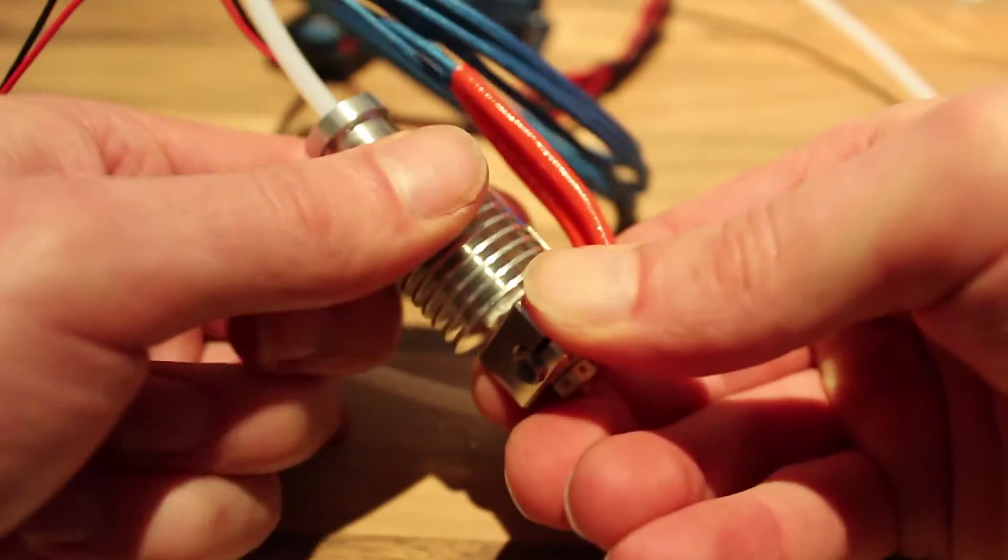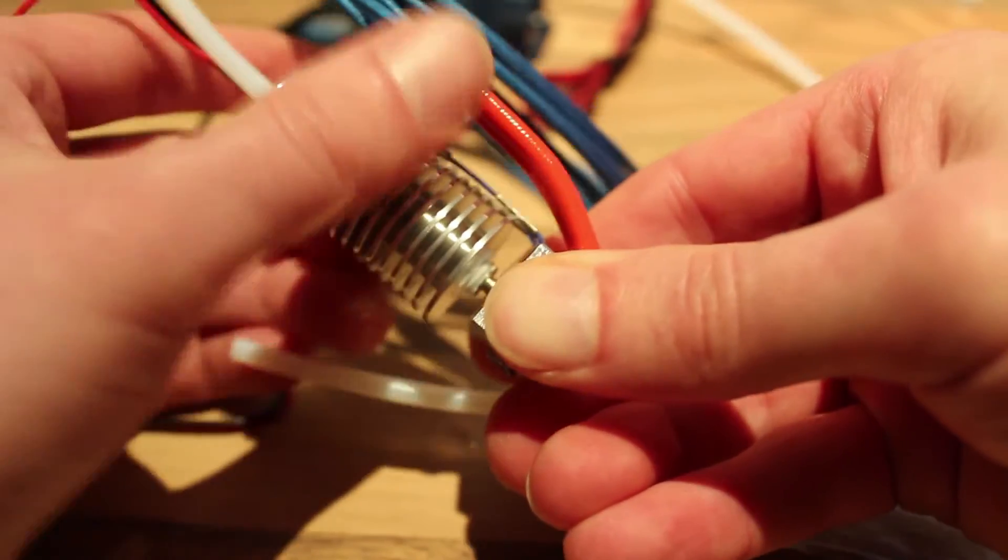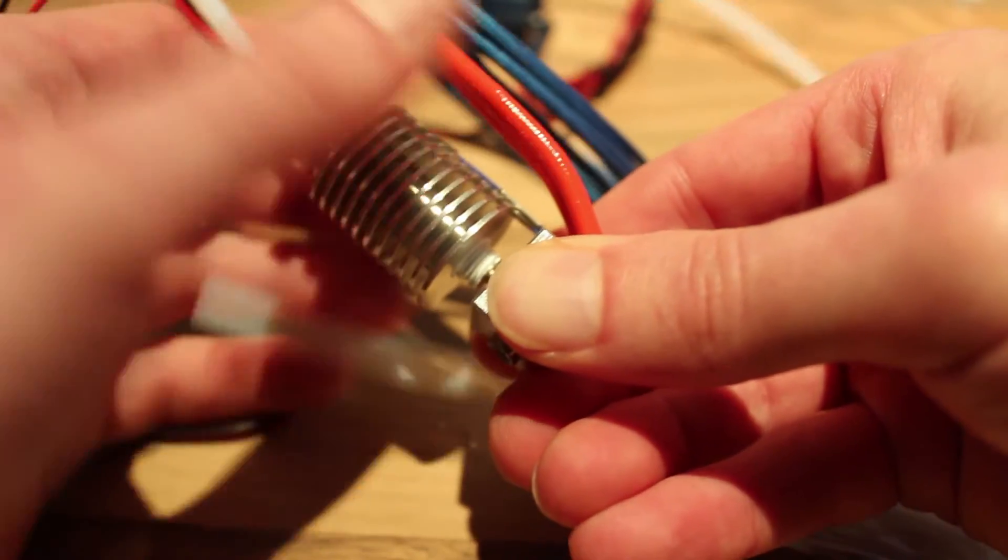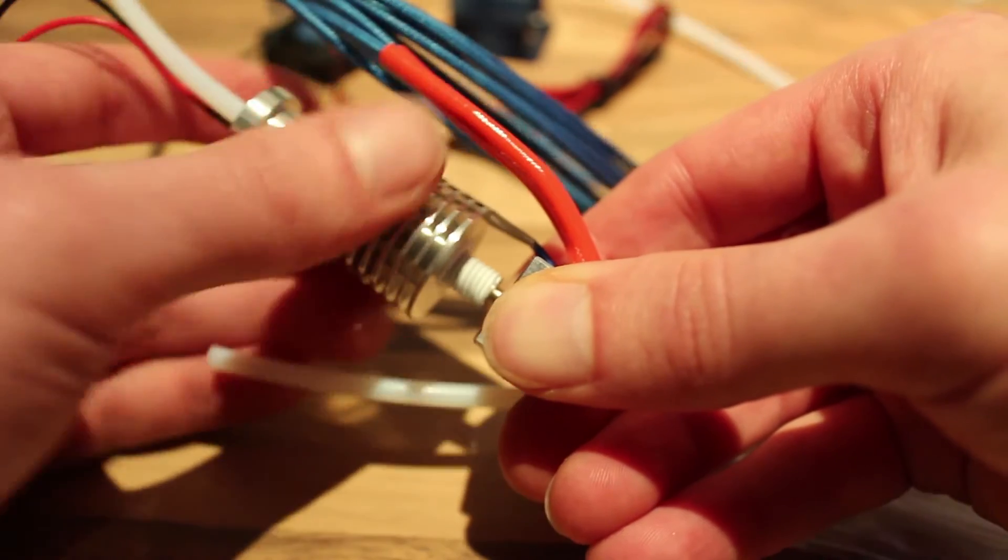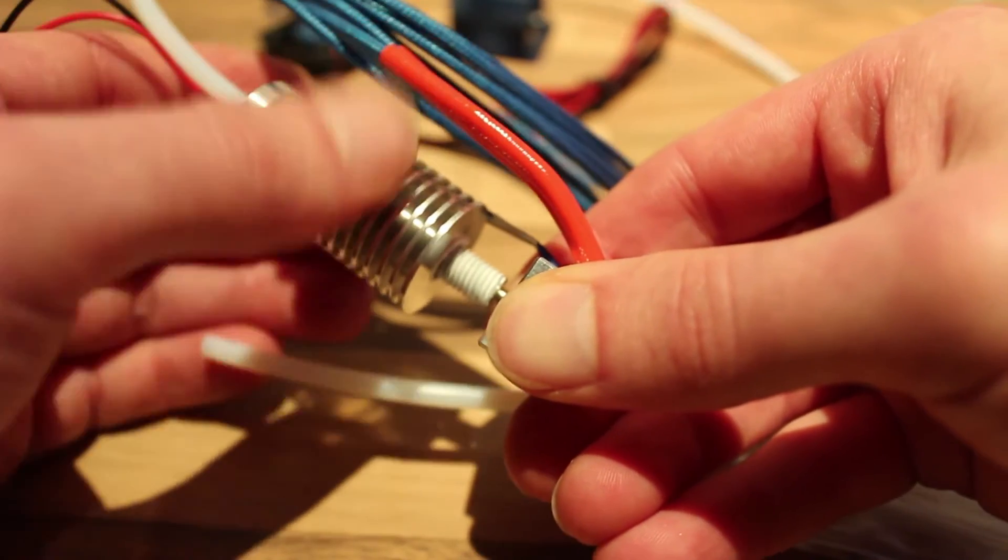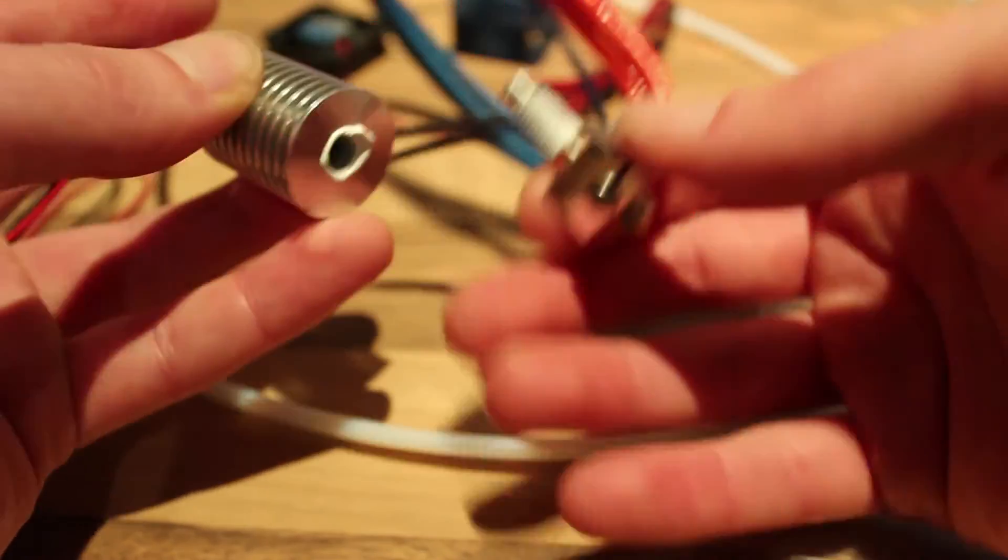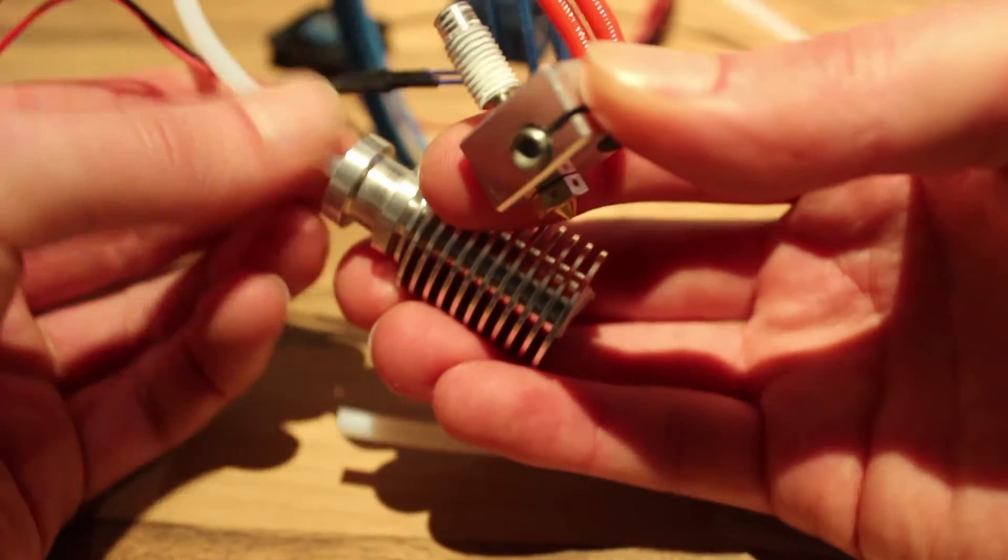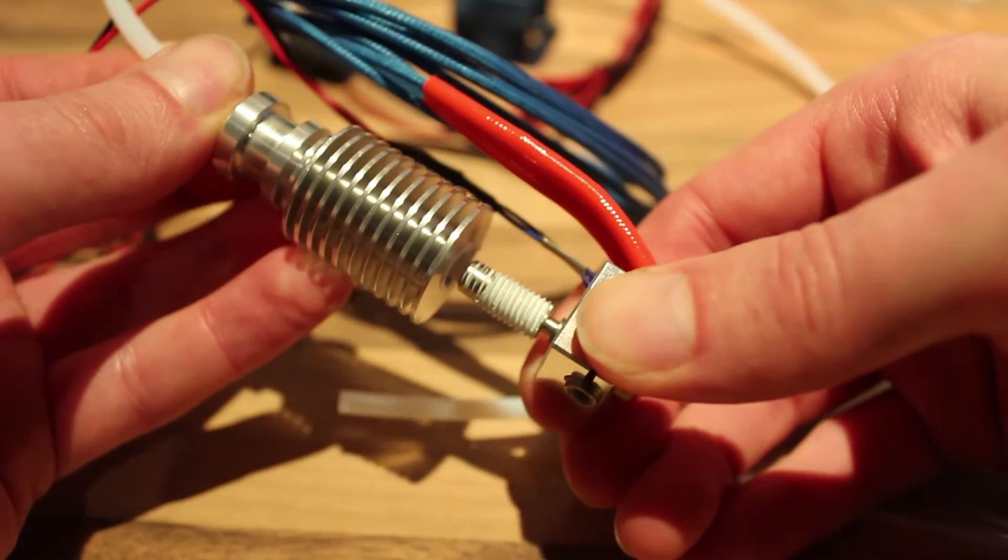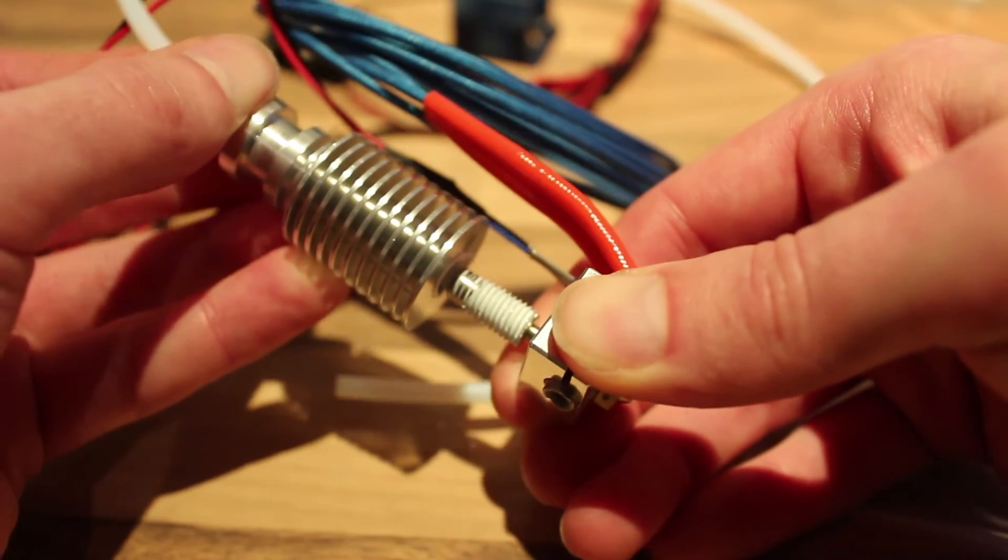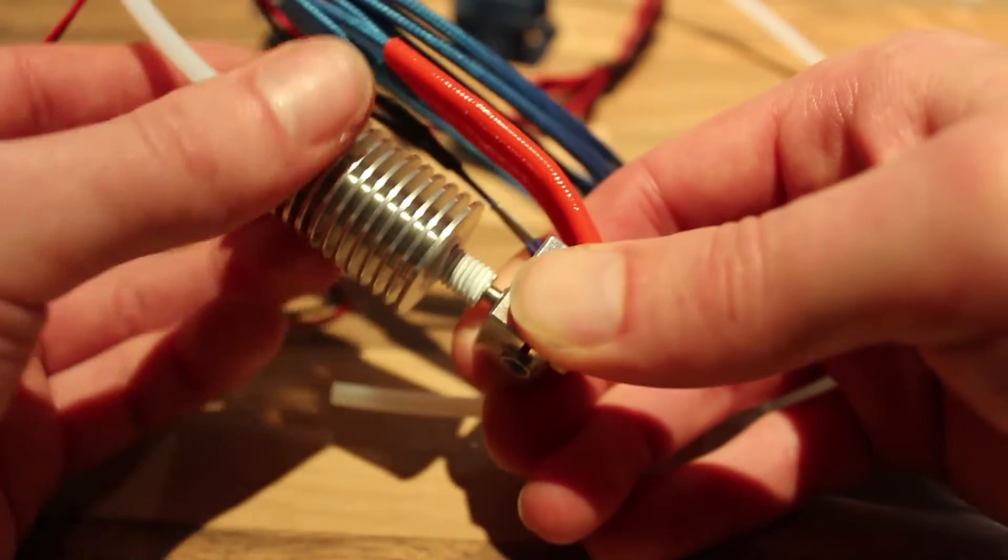The only thing is with a 1.75, you have to check if it goes all the way through because it needs to. You see it's stuck there, so you have to push it through, make sure it's in here and then move it back up and screw it down.